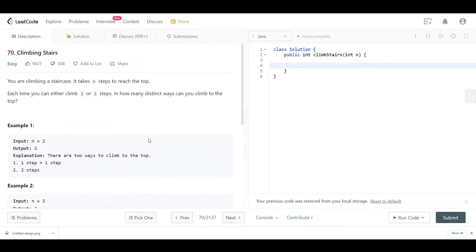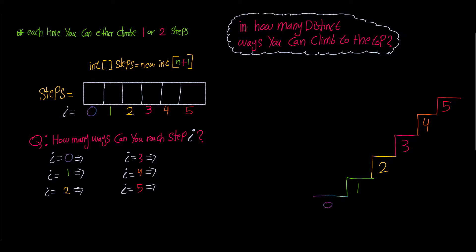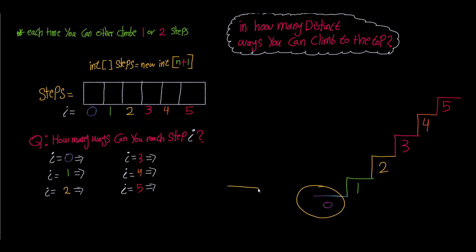Now let's go to the blackboard and explain how we can tackle this. The main question is: in how many distinct ways can you climb to the top, where each move is either one step or two steps. I've drawn a staircase with each step colored differently. I've created a steps array that will hold n plus one places — n steps plus a step zero — and I'll explain why shortly.